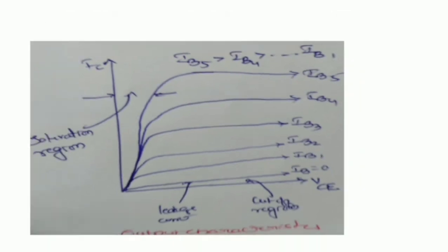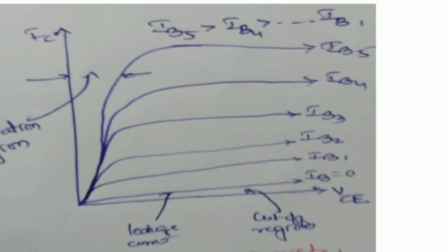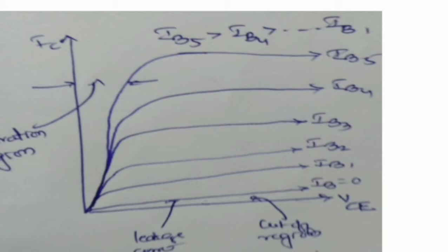For input characteristics, IB versus VBE, the output voltage VCE is constant. For output characteristics, IC versus VCE, the input current IB is constant. For IB equal to 0, that is curve 1. For IB not equal to 0, the initial part of curve 2 is characterized by low VCE, called the saturation region. The flat part of curve 2, with increasing VCE and almost constant IC, is the active region.